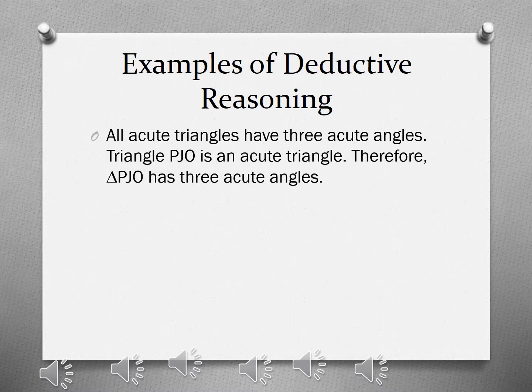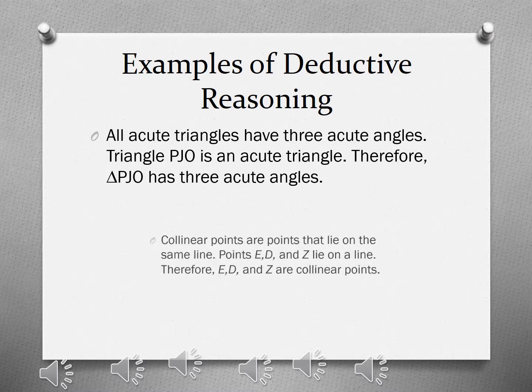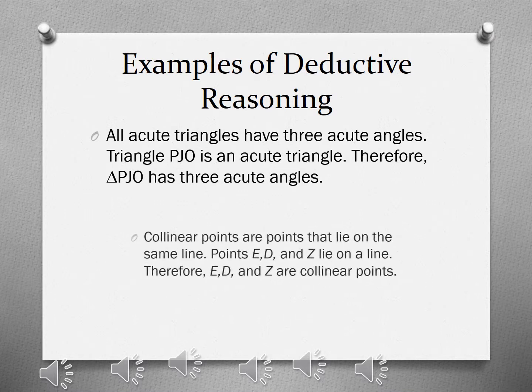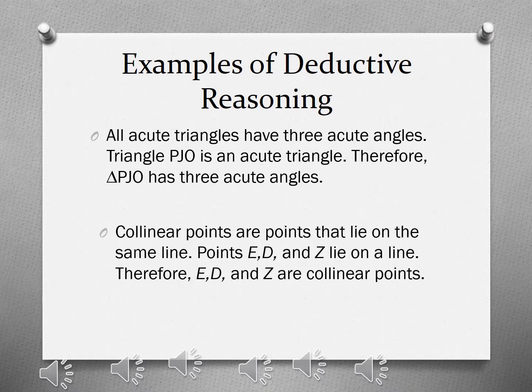Another example of deductive reasoning: collinear points are points that lie on the same line. Points E, D, and Z lie on a line. Therefore, E, D, and Z are collinear points. The conclusion of this argument is based on a definition which is accepted as true. This is an example where deductive reasoning is used.